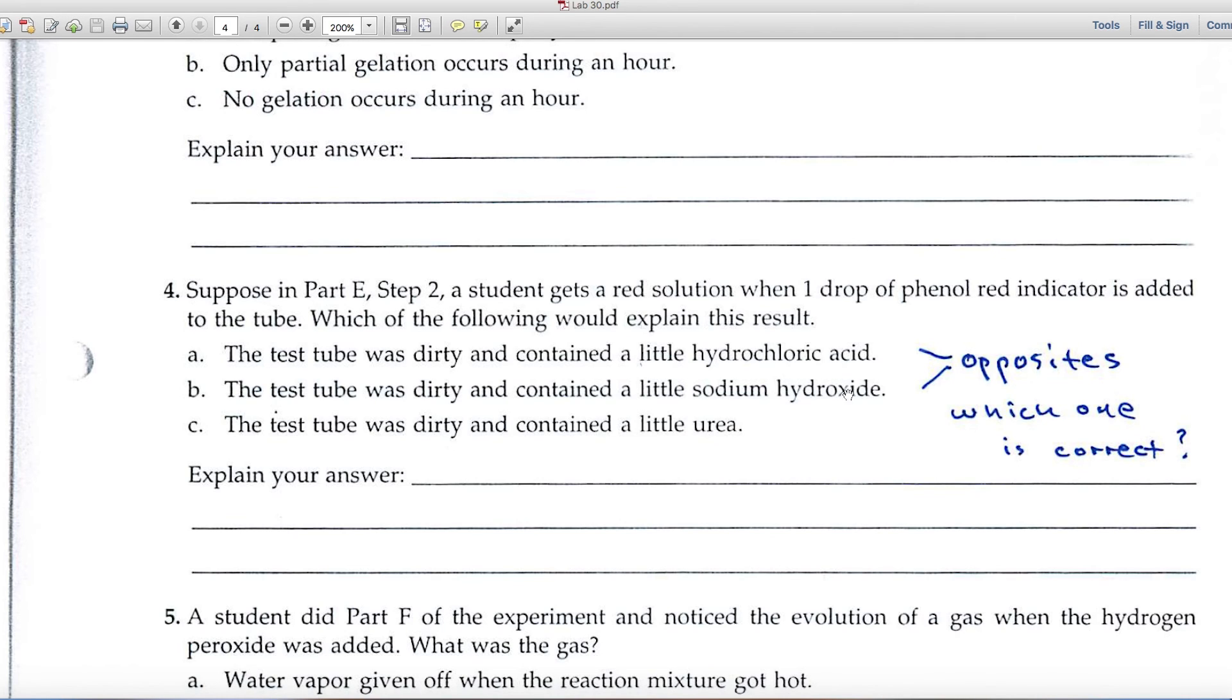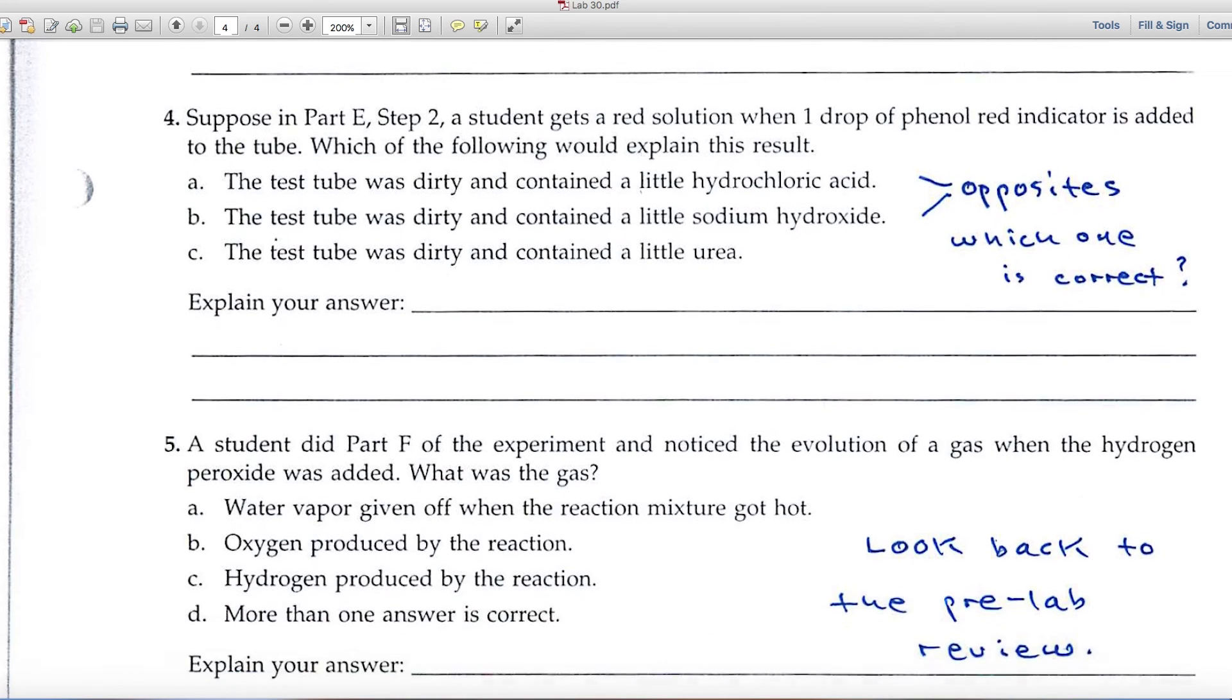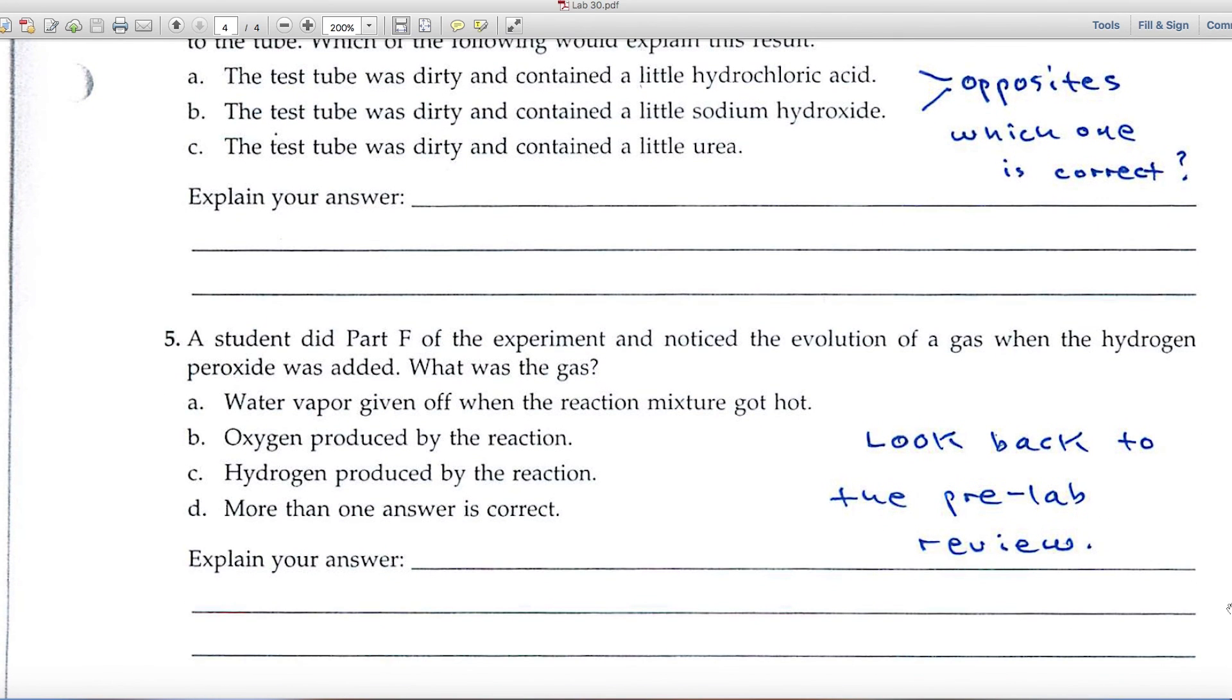A has an acid, and B is treating it with a base. So because they're opposites, chances are one of those two – A or B – is correct. I'll let you decide which one is correct.